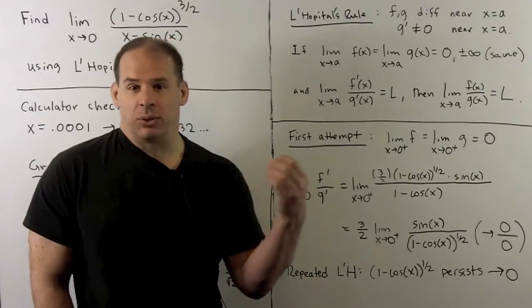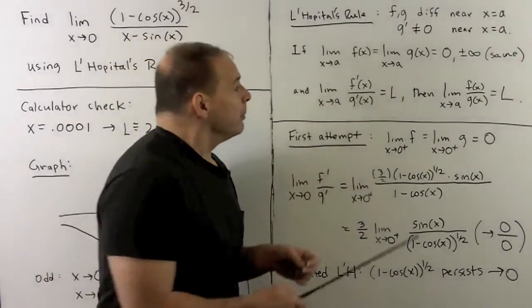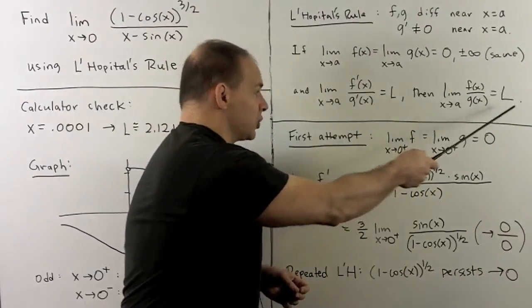If that exists, let's say is equal to L, then the limit of our original quotient will also be equal to L.